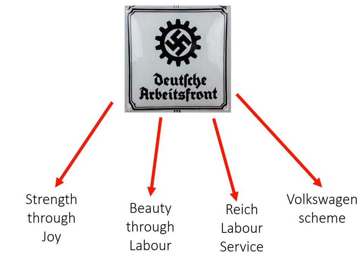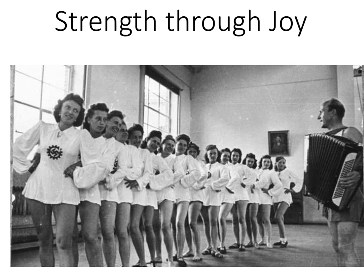Strength Through Joy provided really cheap leisure and tourism for German workers. If you were a member of the Deutsche Arbeitsfront — and by the end of the 1930s 29 million people had joined — you could buy cheap tickets to the theatre, cheap tickets to concerts, and sign up for really cheap holidays and cruises. You can see a concert being performed to German workers in this picture. That sounds like a great thing, but at all of these events there was political indoctrination happening. If you went on a Nazi cruise, part of your day involved listening to a political lecture.